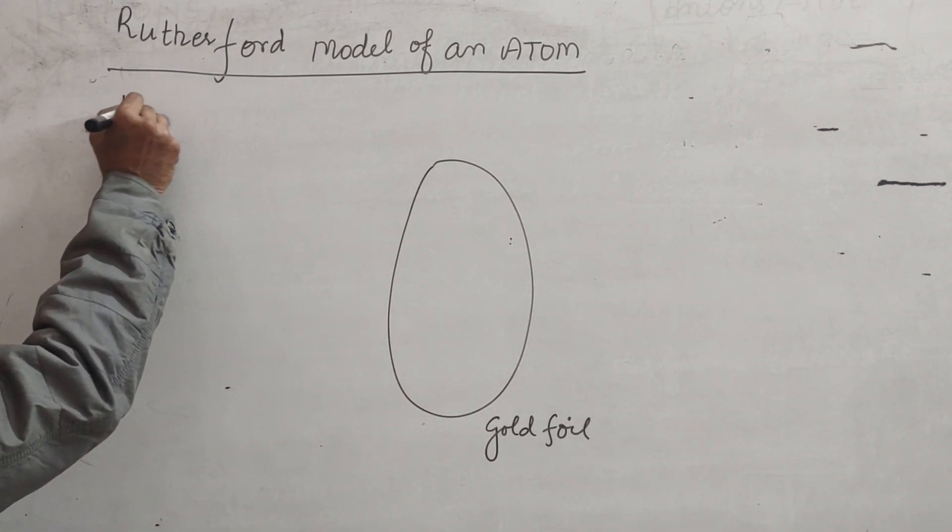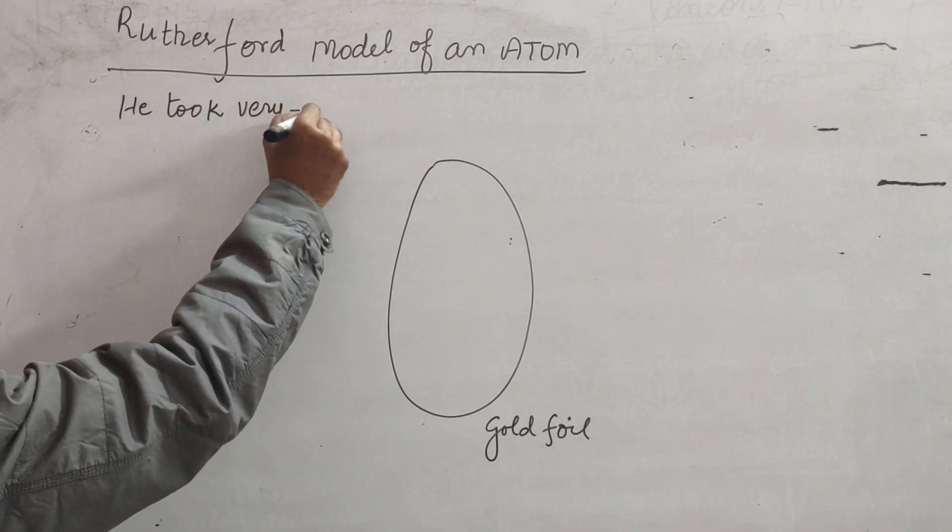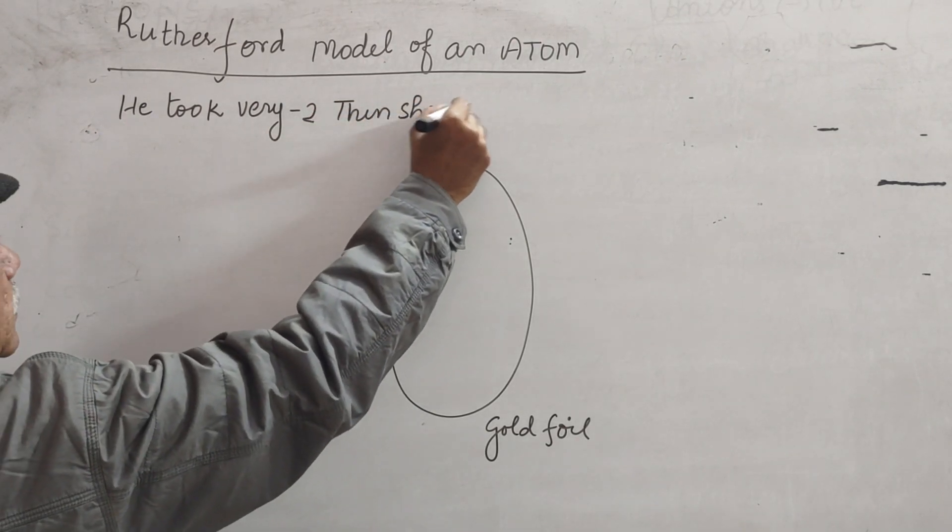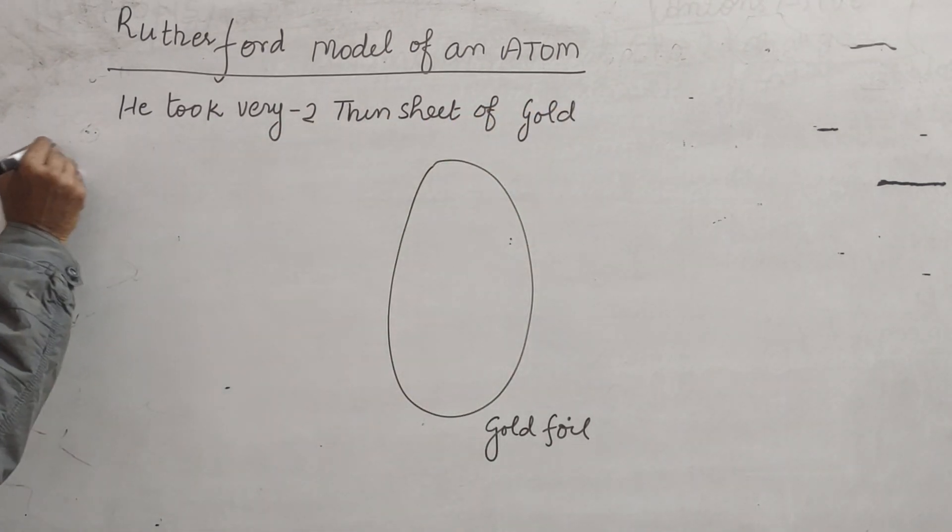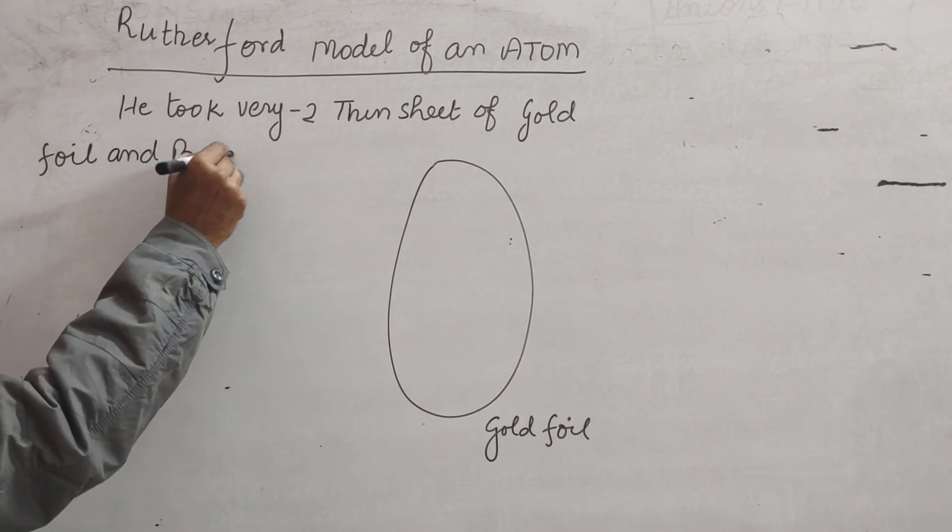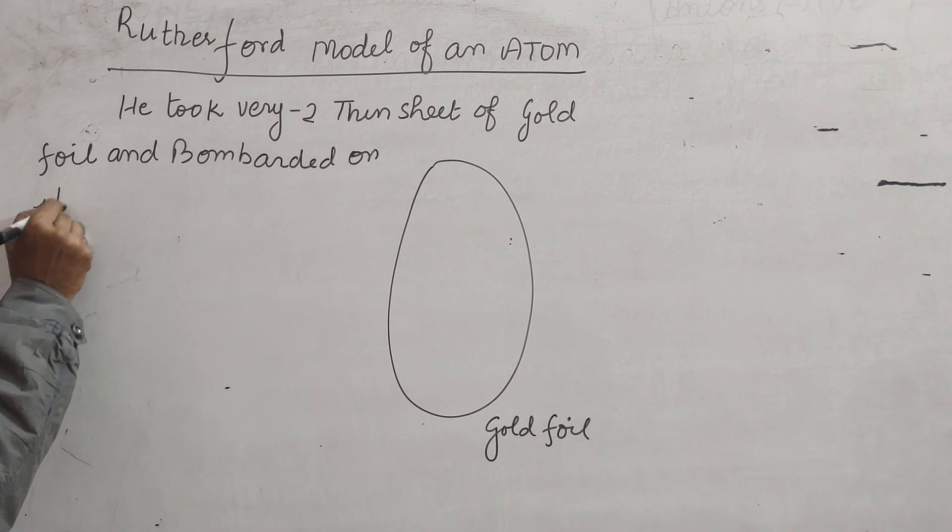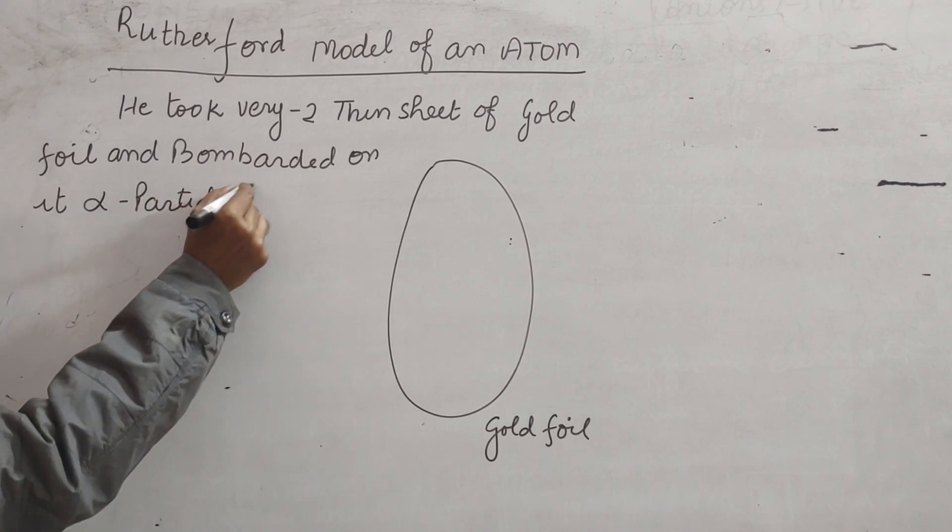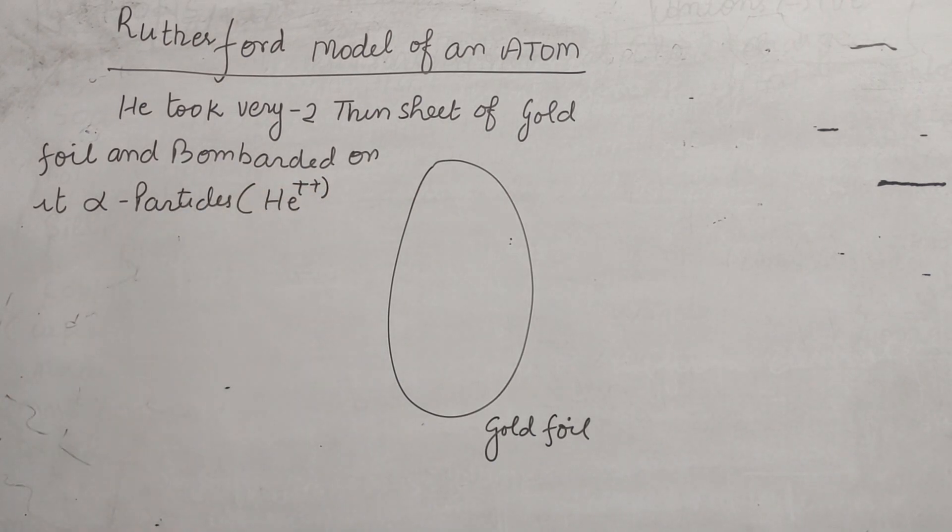He took very thin sheet of gold foil and bombarded on it alpha particles. These are helium plus two particles.